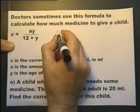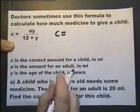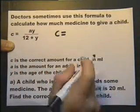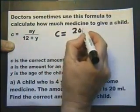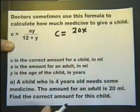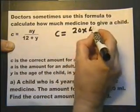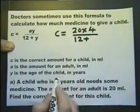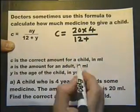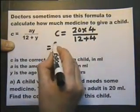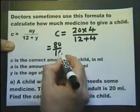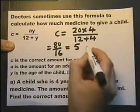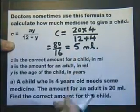So C is the correct amount for the child, and we do A, which is the amount for adult, and multiply that by the age of the child, and the age of the child is 4 years. And underneath we do 12 plus Y, which is the age of the child. So we've got 80 over 16. 80 divided by 16 is 5, so the correct amount for the child is 5 milliliters.